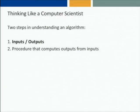When you're trained as a computer scientist, you realize there are really two steps in understanding an algorithm. First is to understand what are the inputs and what are the outputs — in other words, what does the algorithm do? And second is to understand the procedure that computes the outputs from the inputs — how does the algorithm do it? I particularly want to focus on inputs and outputs, because if you don't understand them, you probably can't understand the procedure. So really have your antennae out for what are the inputs and outputs of a bioinformatics algorithm.